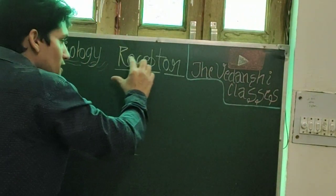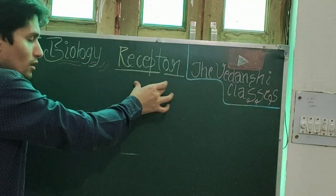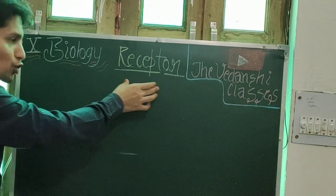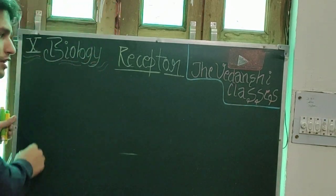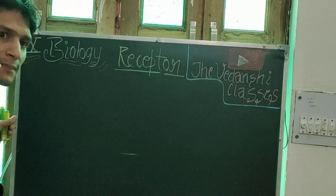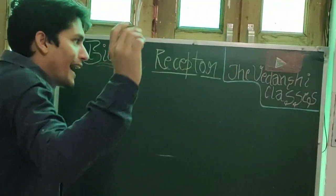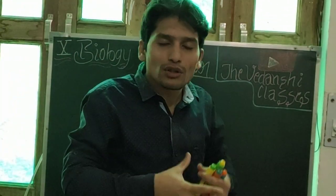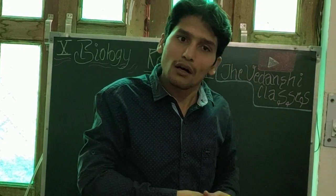Till now we've discussed coordination - two types: nervous coordination and chemical coordination. Nervous coordination happens through neurons, and chemical coordination takes place through chemicals called hormones.